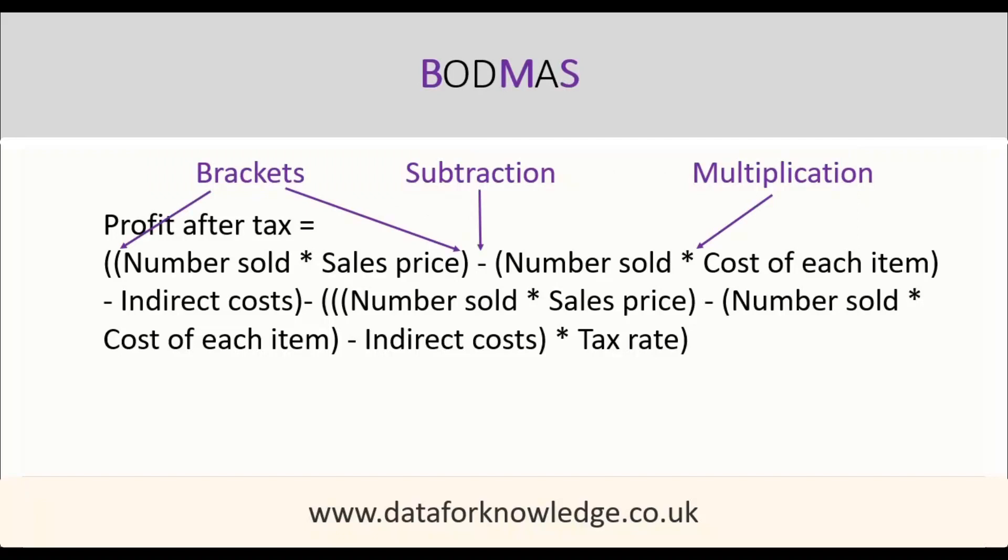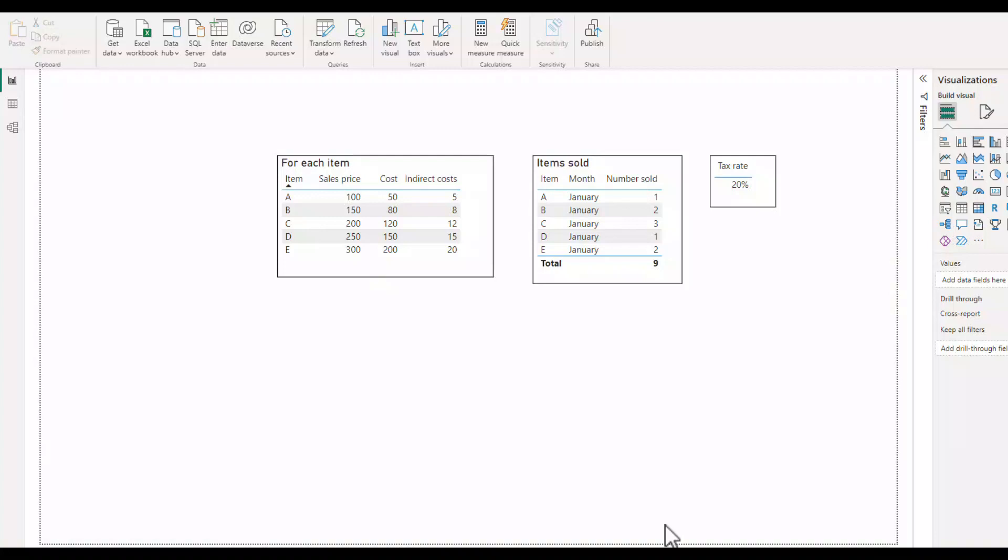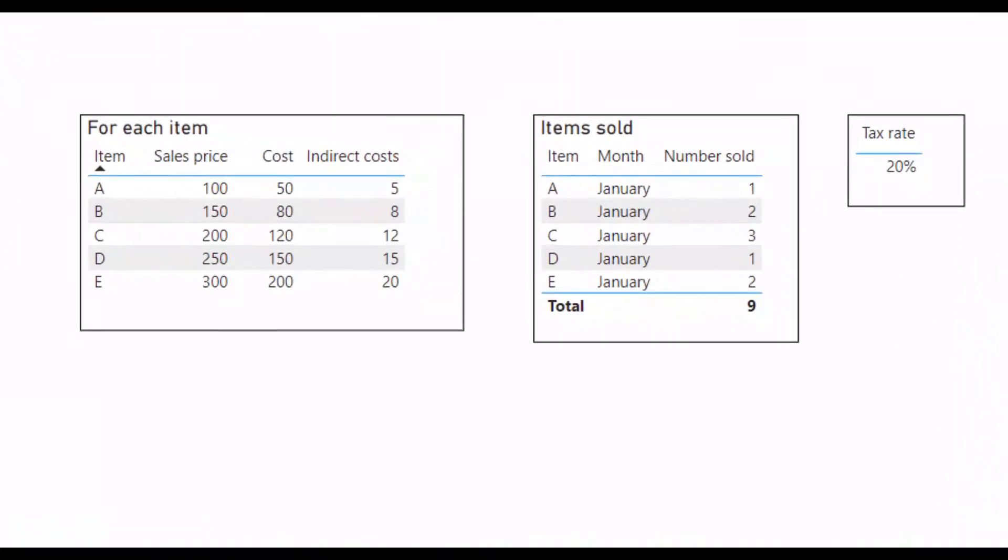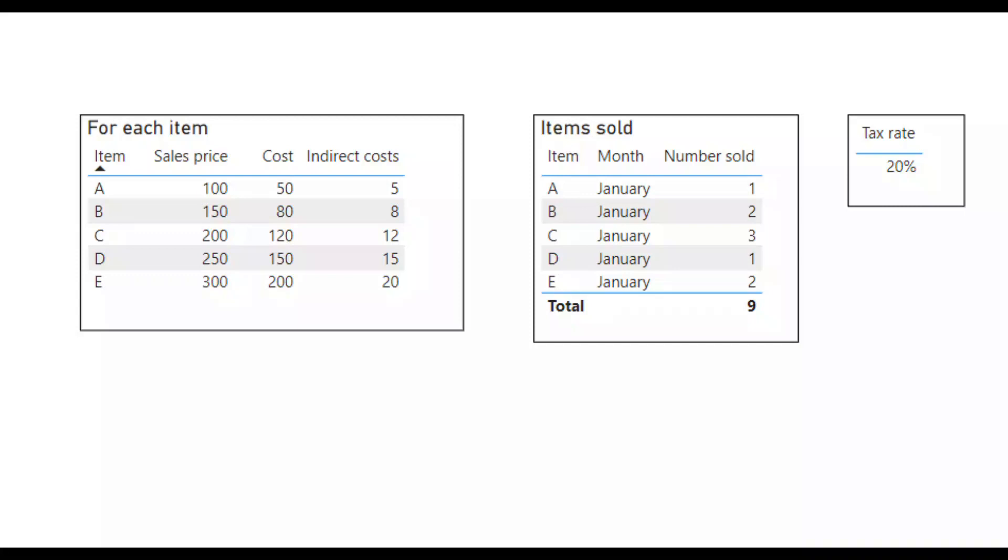The BODMAS rules of mathematics will be considered. In this example, we have brackets, multiplication and subtraction. Here is my Power BI report, which relates to products being sold. For each item, I know its sales price, its cost and its proportion of indirect costs. I also know the number of each item sold in January and I know that the tax rate is 20%.